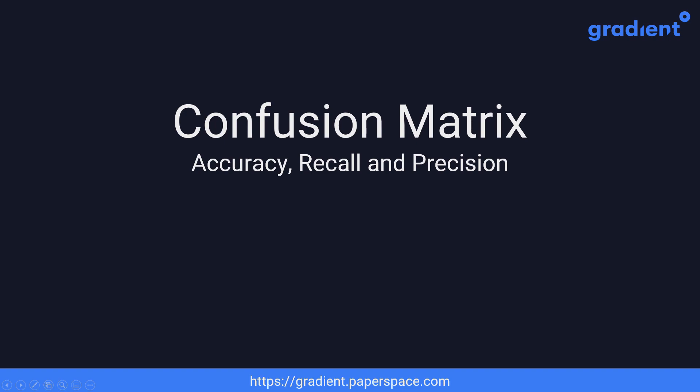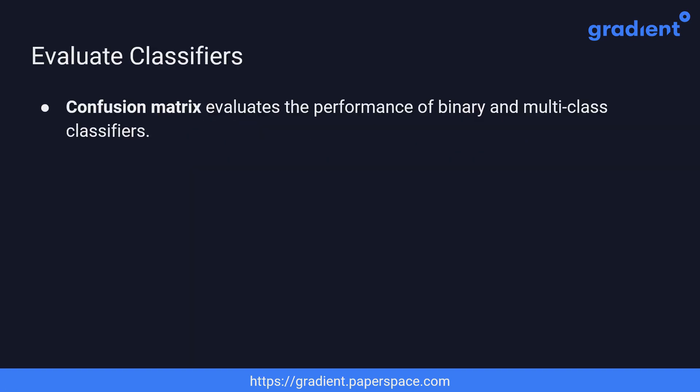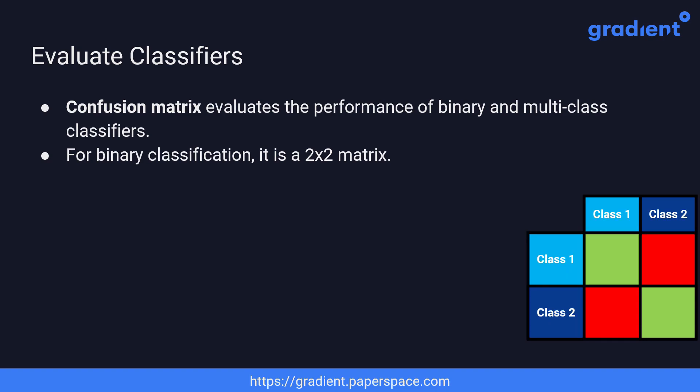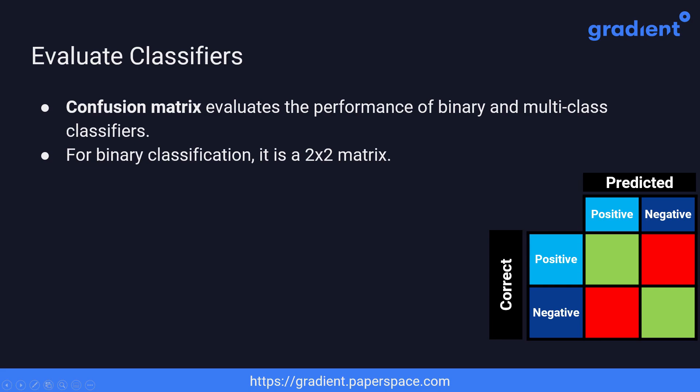The confusion matrix evaluates the performance of binary and multiclass classifiers. It is given the name 'confusion' because it measures how the model is confused in differentiating between the classes. The size of the confusion matrix for binary classification is 2 by 2 because there are only two classes. The labels are distributed across the rows and columns — usually positive and negative — and you select either rows or columns to represent the correct and predicted labels.